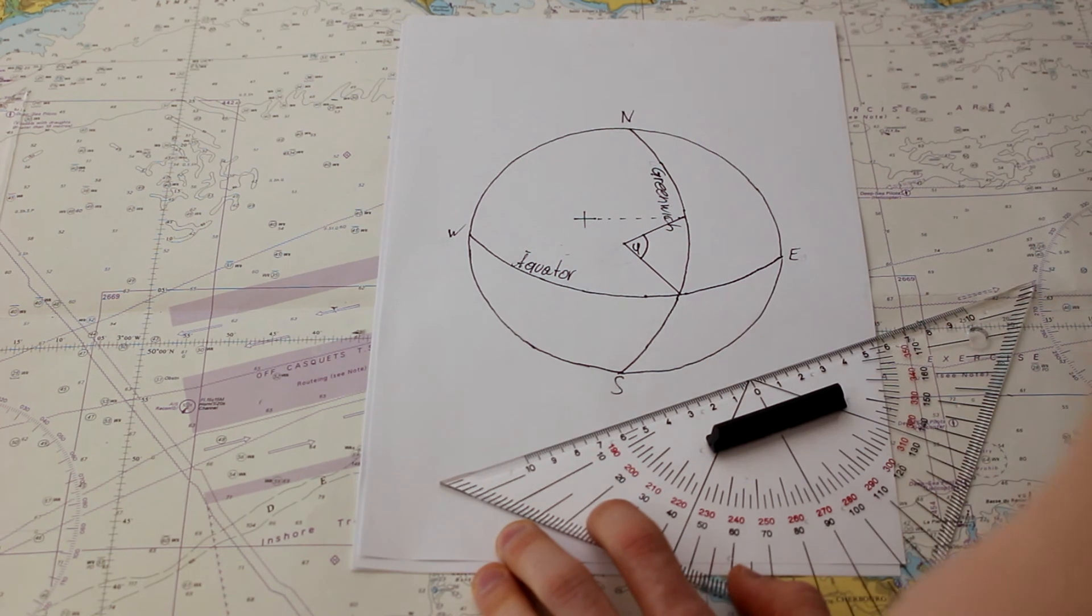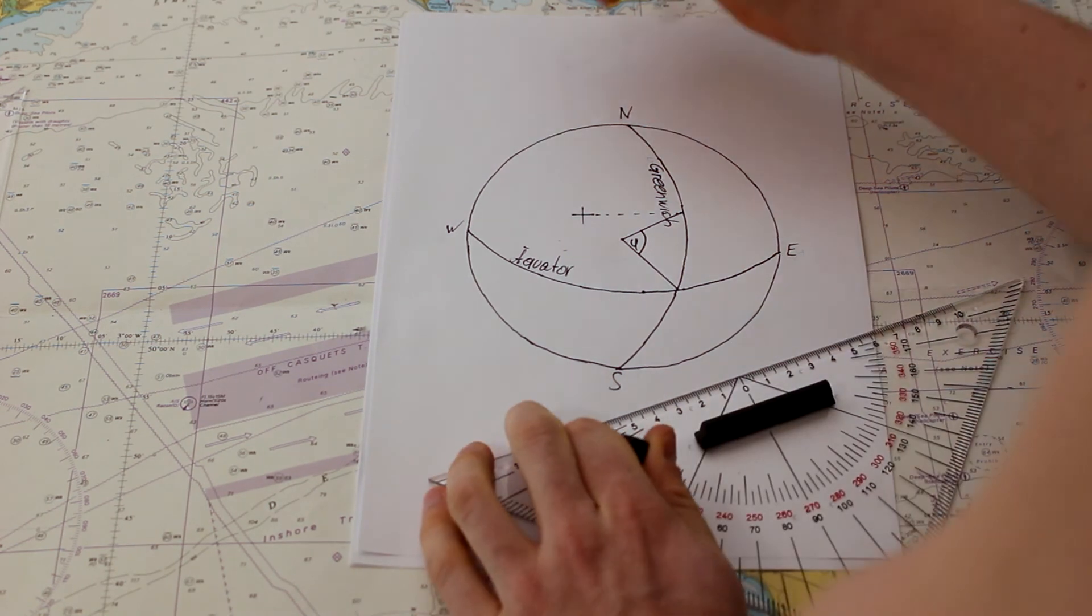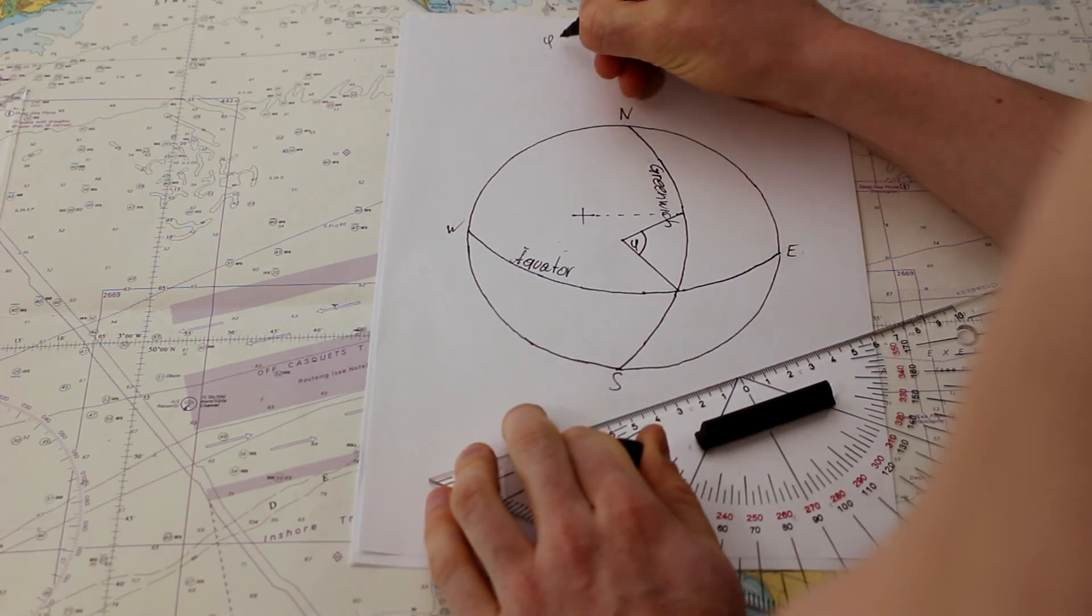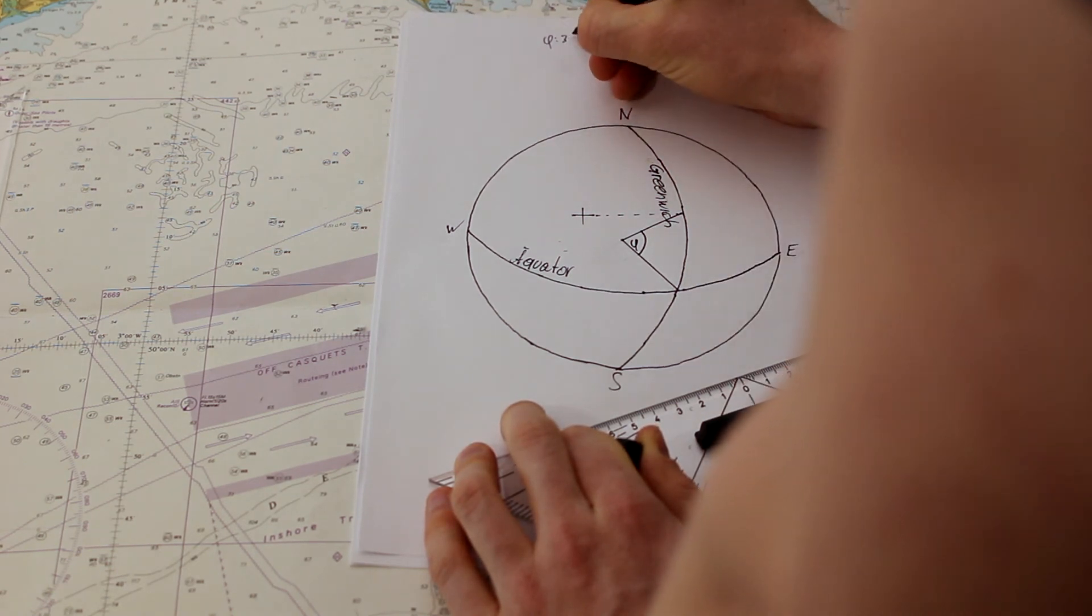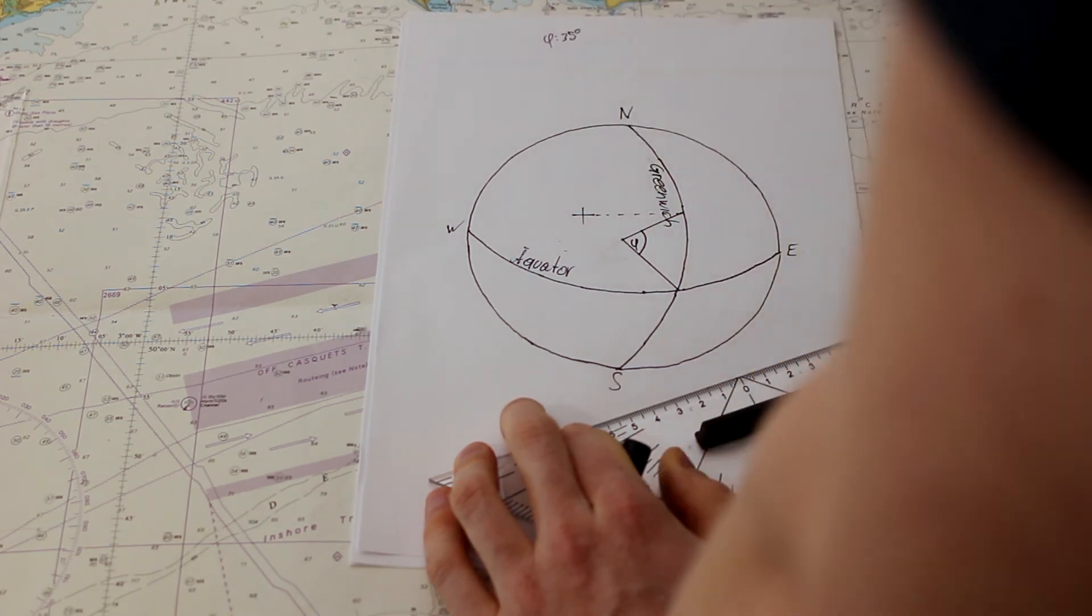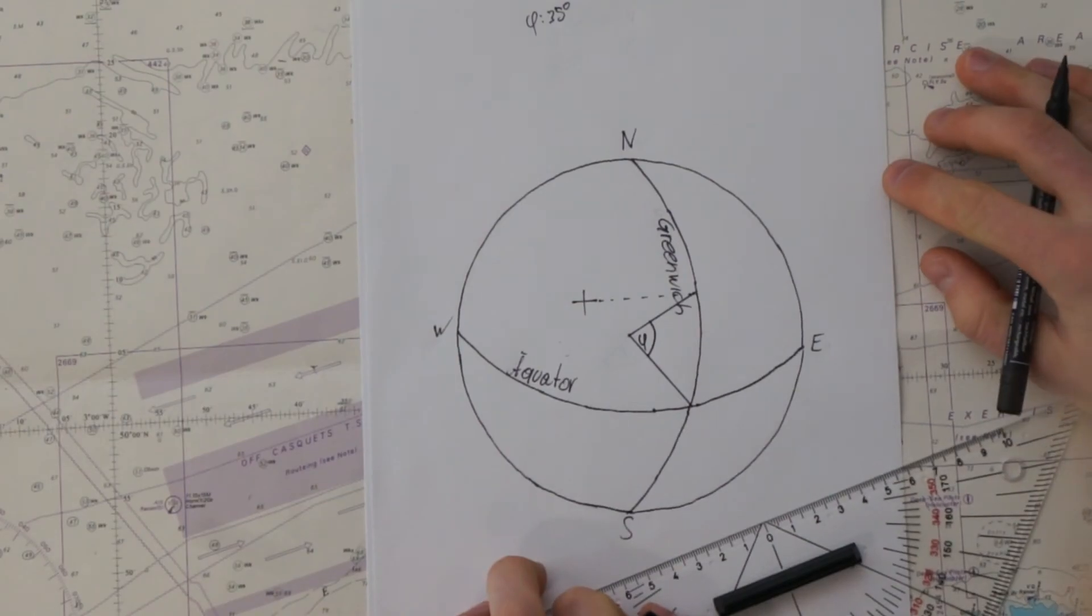So, we say this is for example 35 degrees north. When you plot your position on a paper, so you have it in your logbook or something else, you say 35 degrees. But that's not accurate enough. You need minutes.